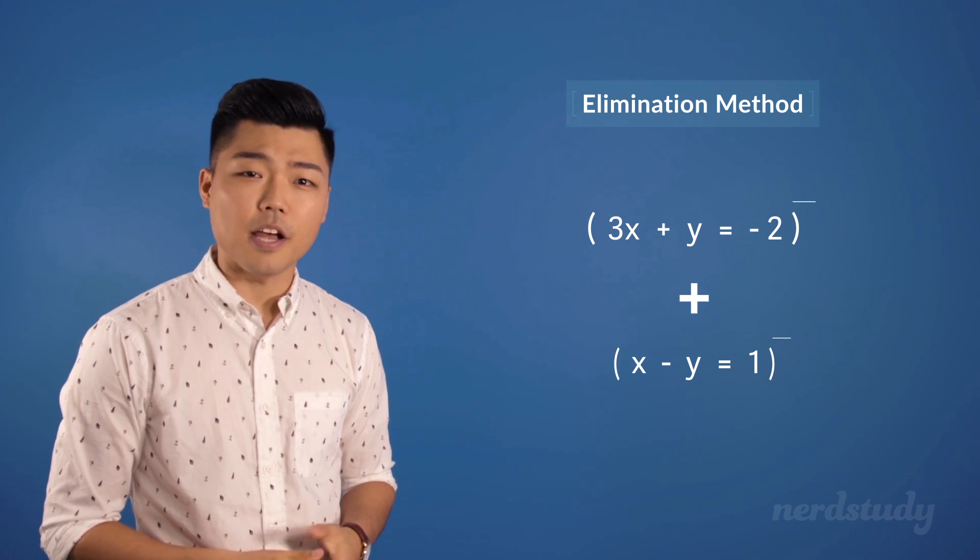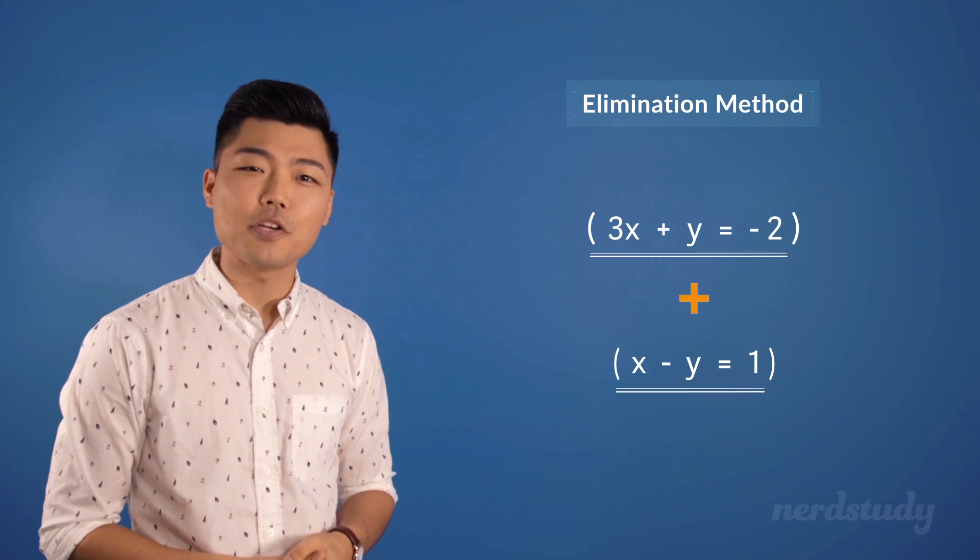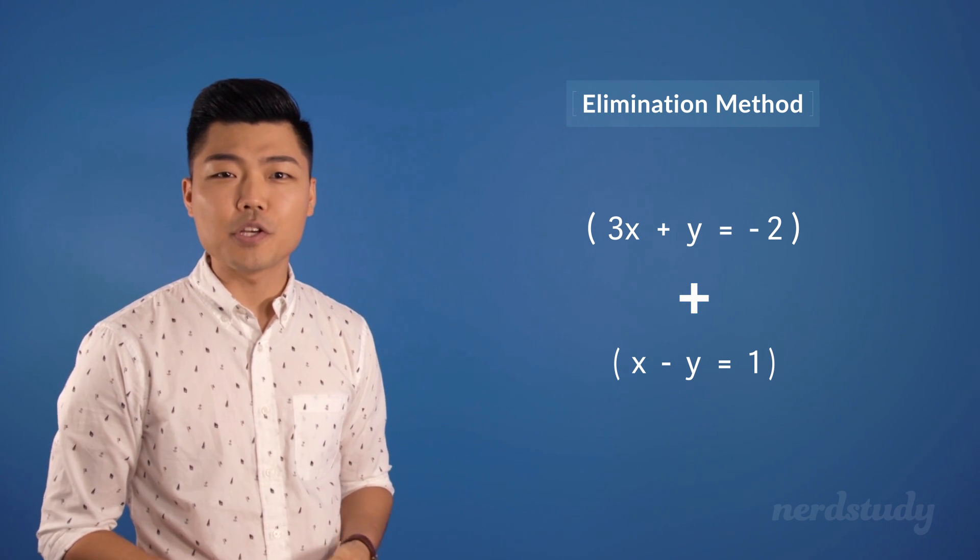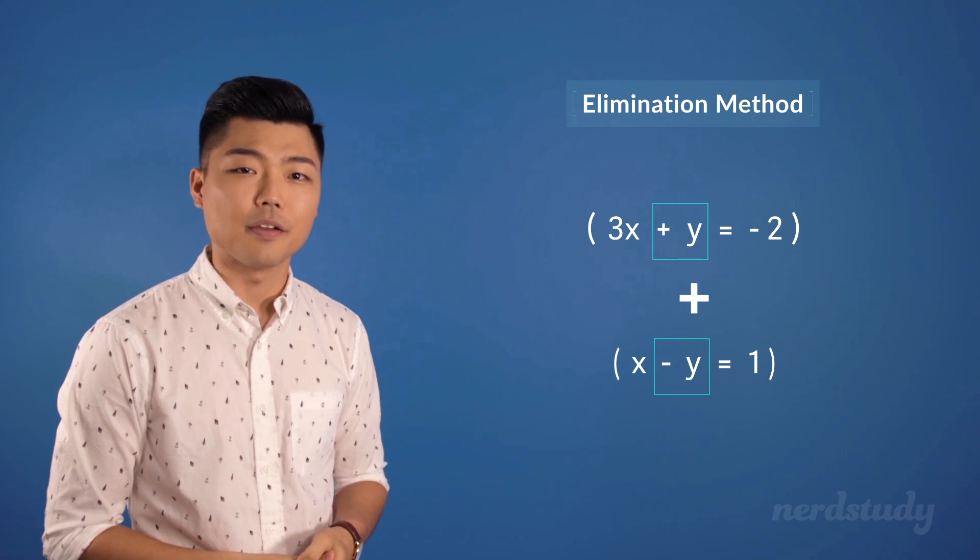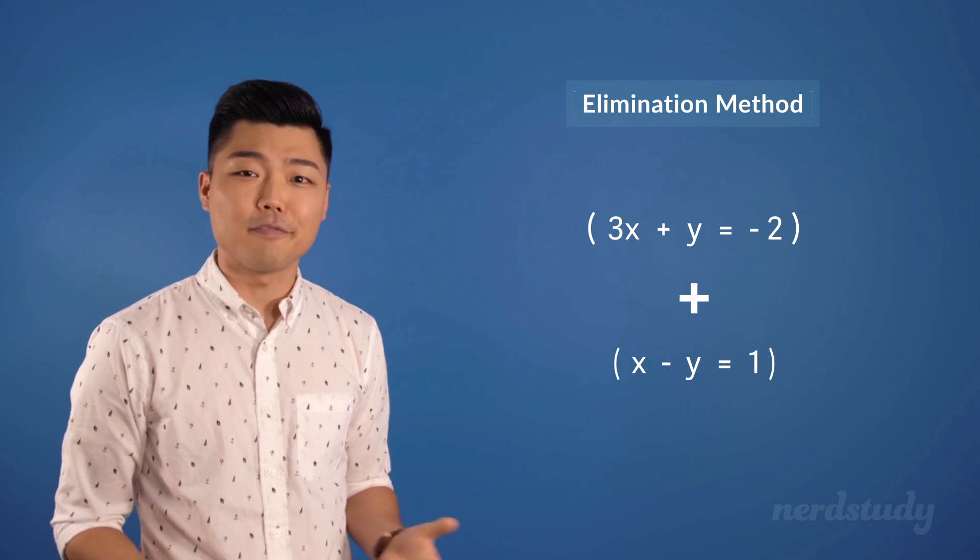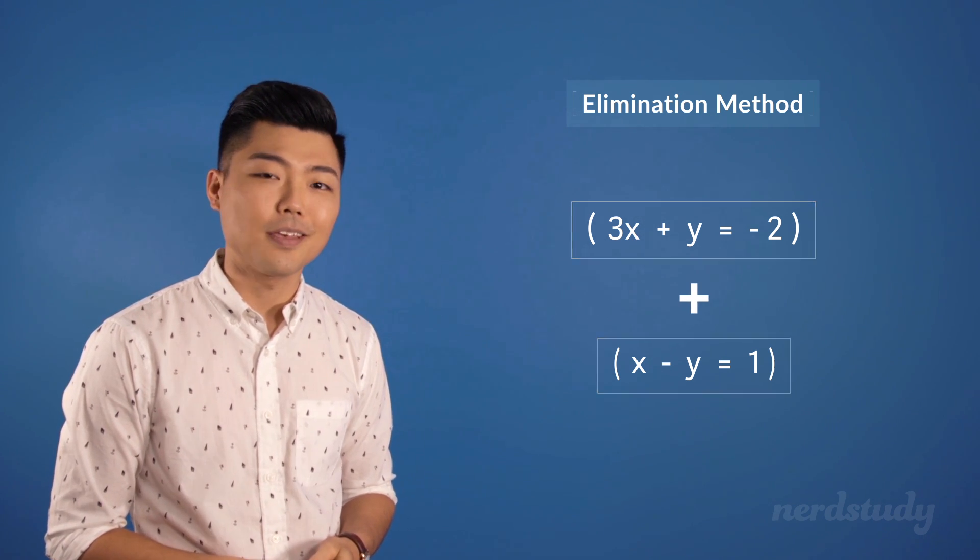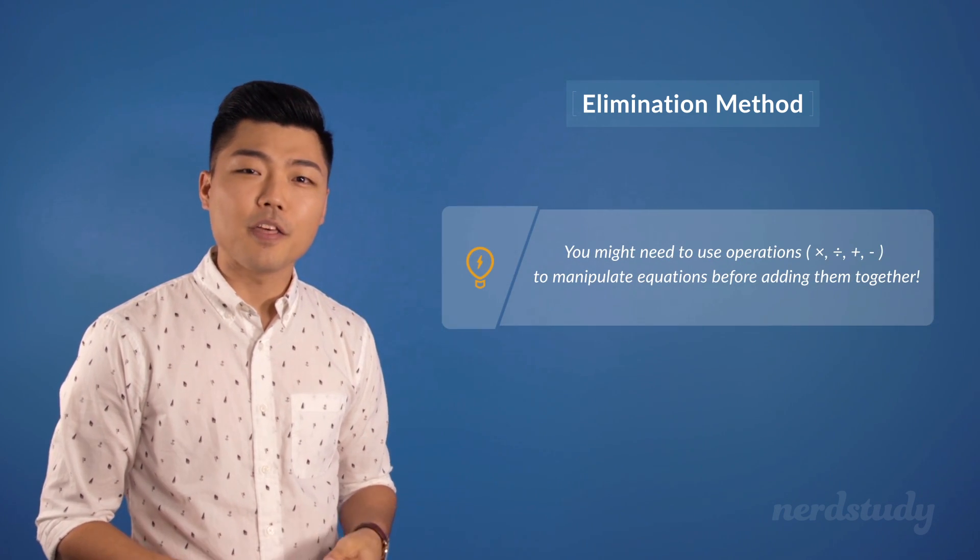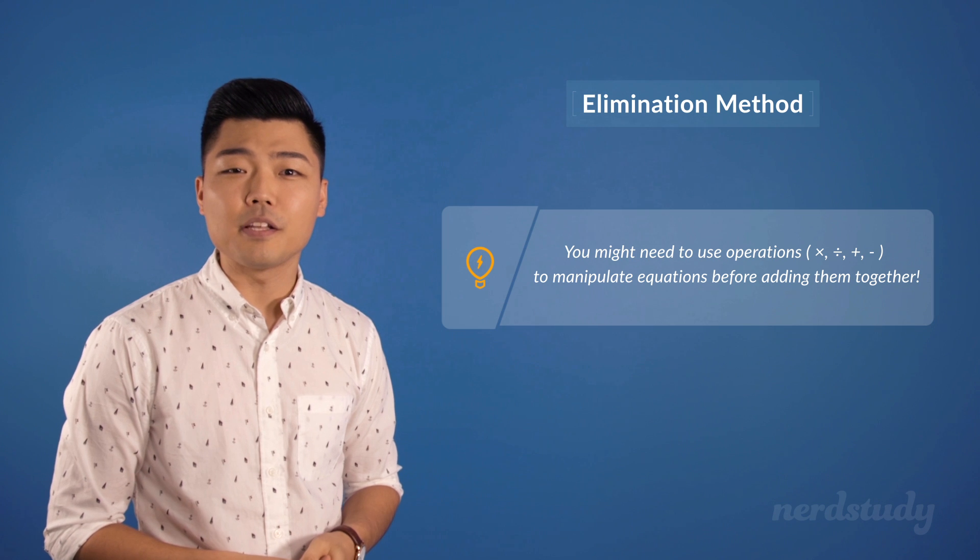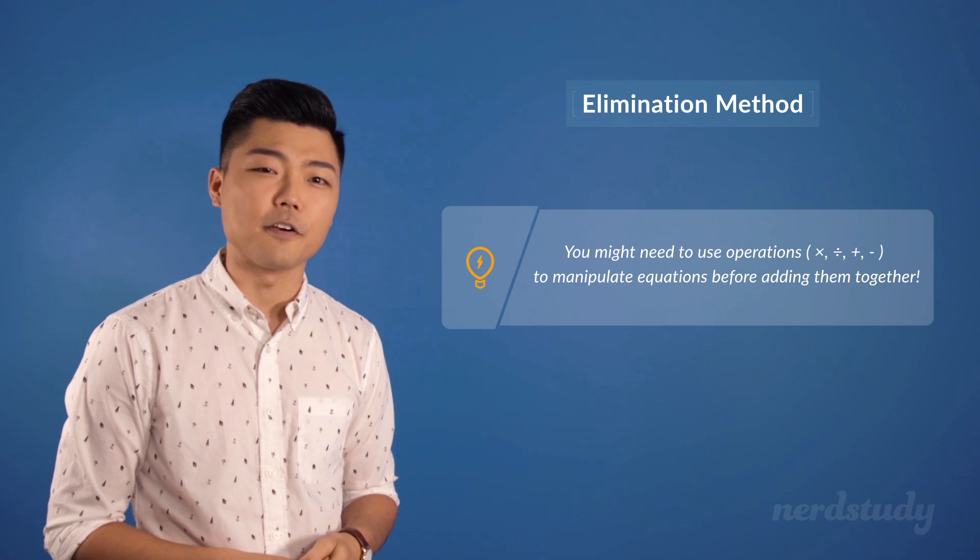In the example that we just did, however, you'll notice that it was easy to just add the two equations together, since one equation had plus y and the other equation had minus y, making it very obvious that all you'd have to do is just add the two equations together. Sometimes, however, you will need to manipulate the equation to ensure that one of the variables will be eliminated in the process of adding the two equations together. So let's try another example.